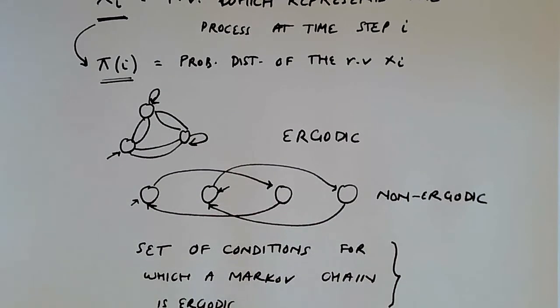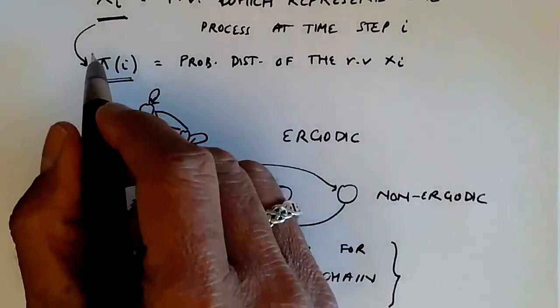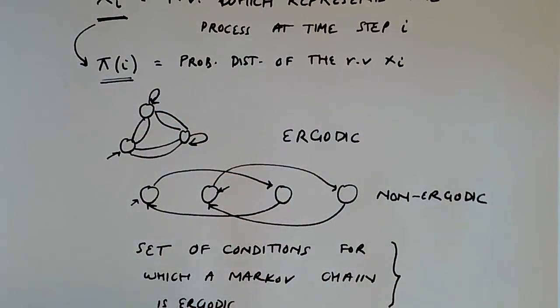then we can be sure that this particular Markov chain is going to have a convergent distribution for its expected probability distribution for its random variable as the chain evolves over time.